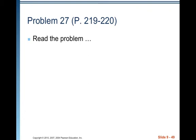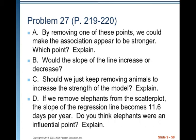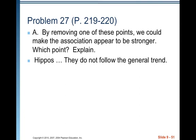All right. Look at problem 27. Oh, elephants and hippos. You might want to go back and look at 25 also just to get a little bit of background information. It's all about life expectancy and gestation for a bunch of animals. So go read the problem. All right. So we're going to answer a bunch of questions. A. By removing one of these points, we could make the association appear to be stronger. Which point do they want you to explain? Well, hippos, they don't follow the general trend. They have an extraordinarily long life expectancy relative to the gestation, a relatively short gestation period.